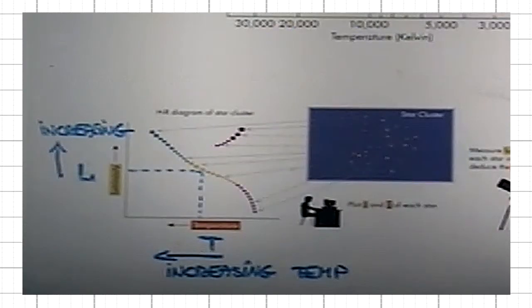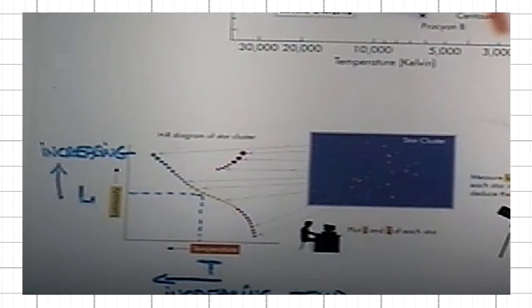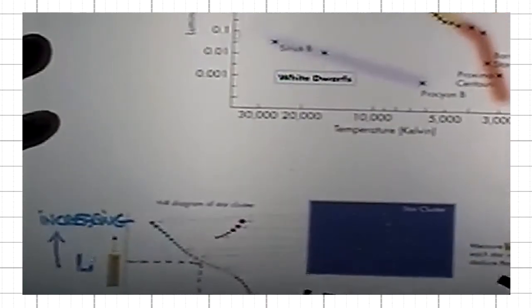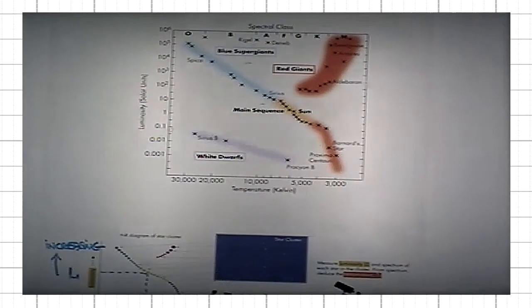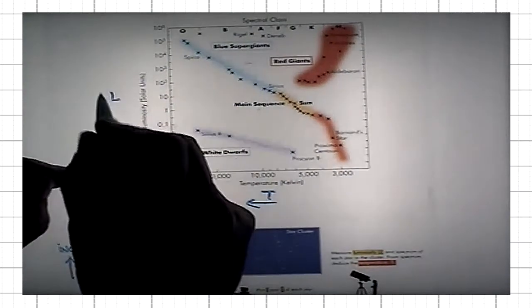You represent on this luminosity-temperature diagram each star by a point. The coordinates of that point are the surface temperature and the luminosity of the star. When you do that for a cluster, or any number of clusters, the typical result looks like this. There are three main groupings of stars, as you can see here. Here again, the temperature runs this way, the luminosity runs this way.